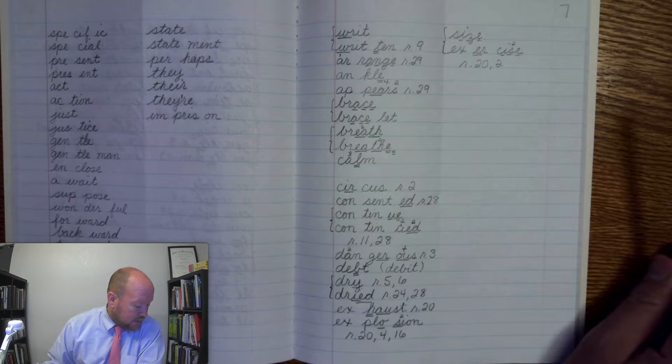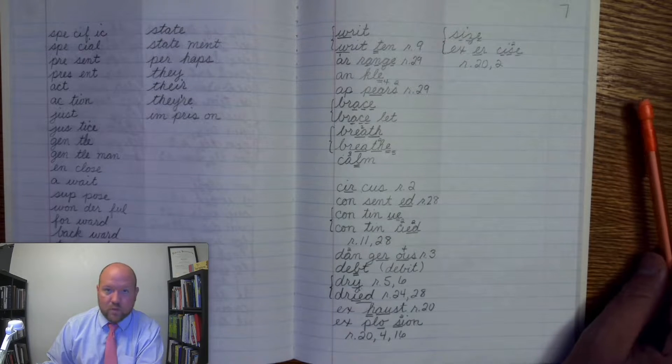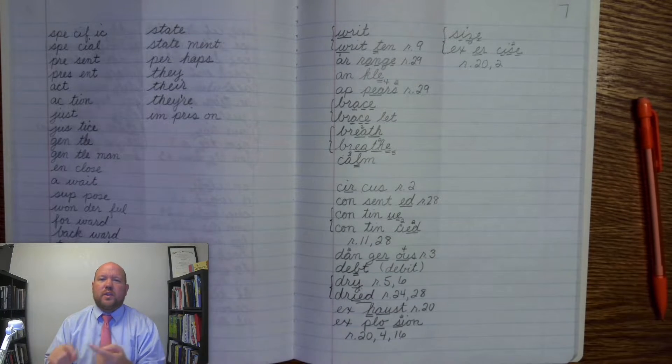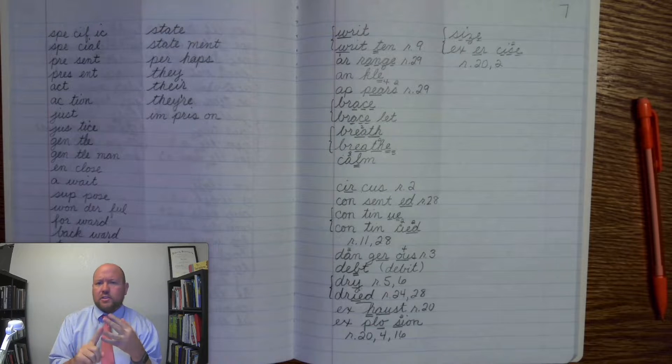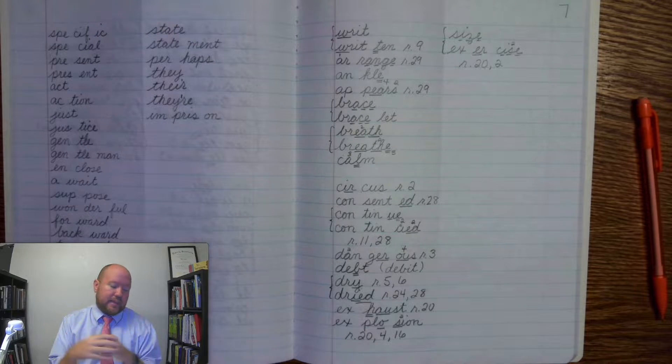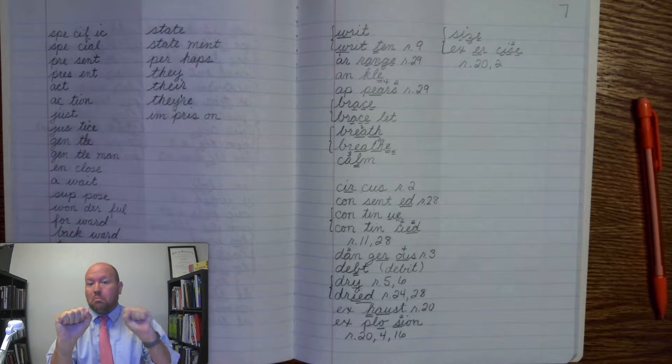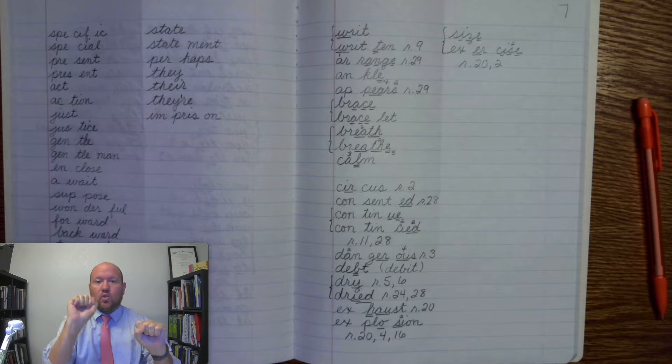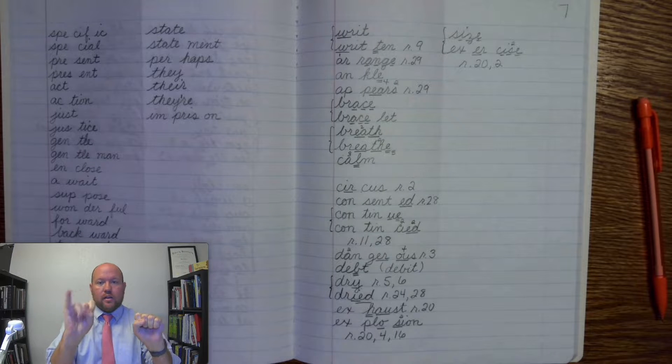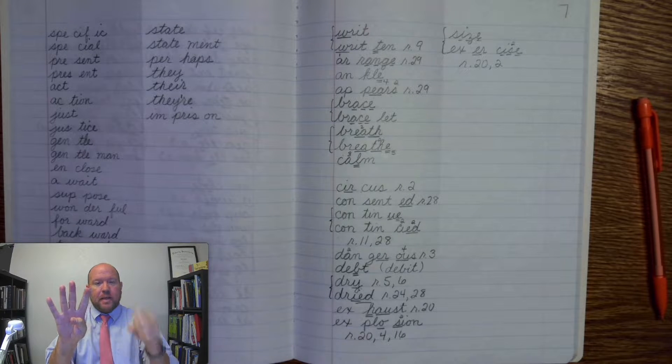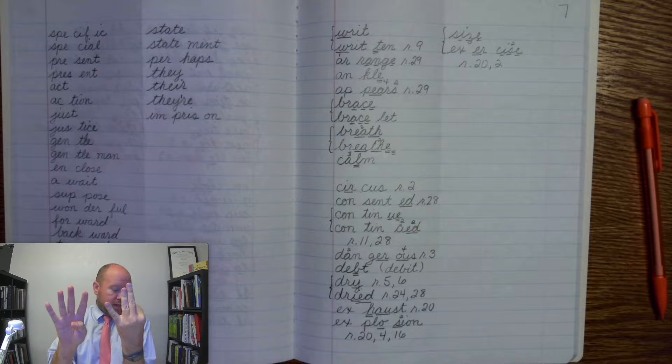All right. The next word is grammar. So, grammar has to do with nouns and verbs and adjectives, how we write sentences and things like that. Grammar. Base word grammar. Gram-mar. Hear that last syllable. Gram-mar. G-R-A-M-M-A-R. Grammar.